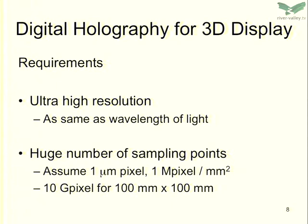Digital holography is very simple — just replace the film with an electronic device. But the requirements are very high. We need ultra-high resolution, the same as the wavelength of light, meaning we need a device with less than one micron pitch. We need to handle a huge number of sampling points. If our pixel is one micron and the hologram is 100mm by 100mm, that means we need 10 gigapixels — so it's quite challenging.